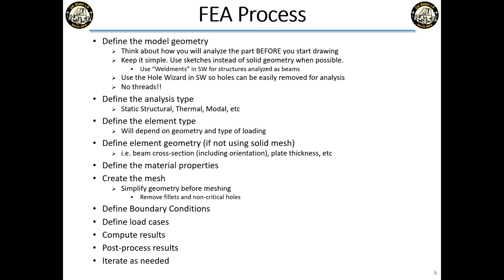Same with fillets: if you know you'll have fillets, don't draw them in the sketch. Draw the sharp square and use the fillet feature, the same as with holes. That way you can remove or modify them later. Add fillets and detail features toward the end of the design so you don't have parametric features attached to fillet surfaces.